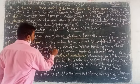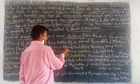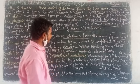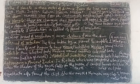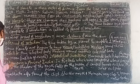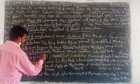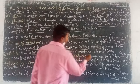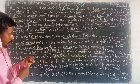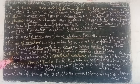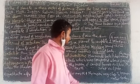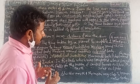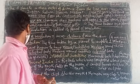Some planets are known to have moons and satellites revolving around them. A satellite is any celestial body revolving around another celestial body. The Moon is a natural satellite of Earth. There are also artificial satellites revolving around the Earth.